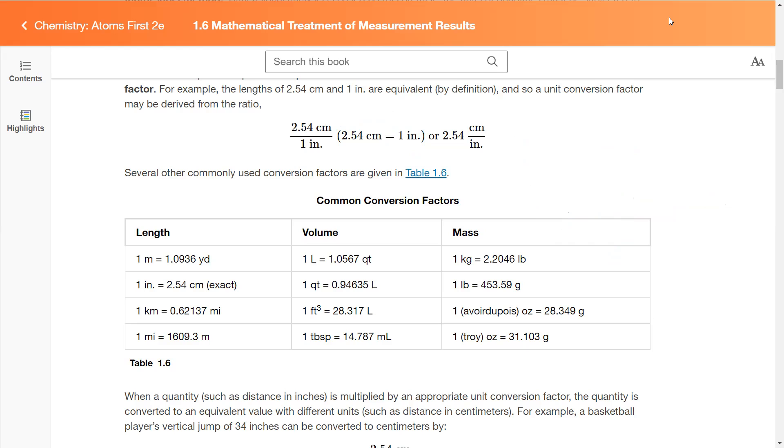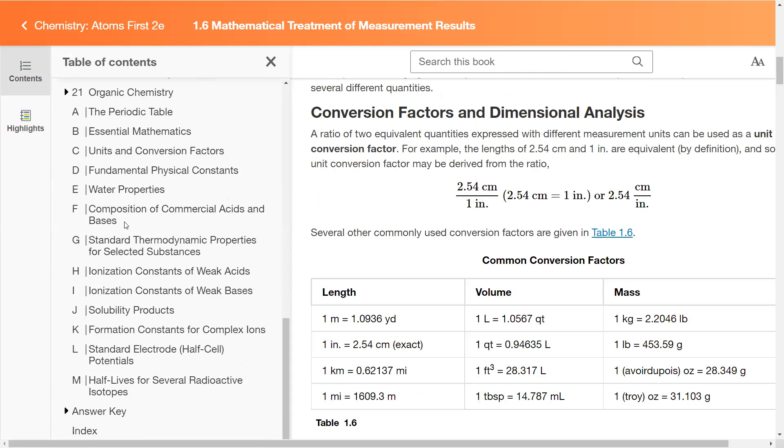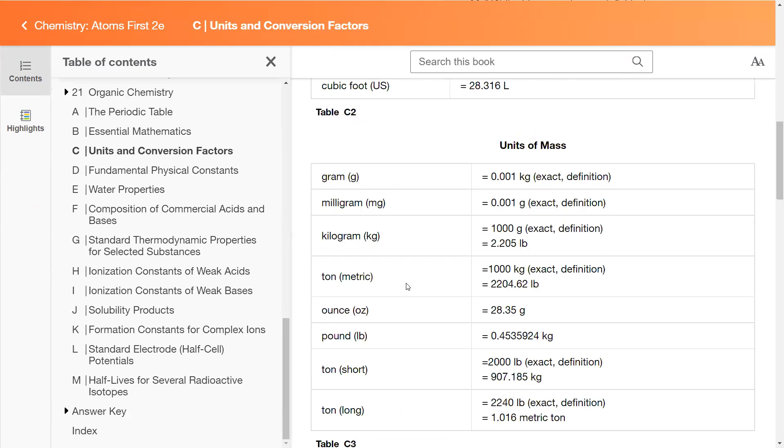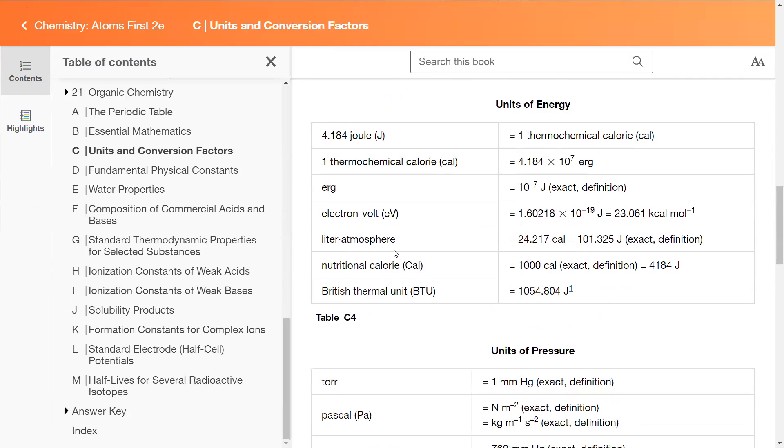In this table, we're provided with a list of common conversion factors. Things to keep in mind or write down will be that relationship between inches and centimeters. Sometimes we will use pounds to grams, but you can always come back to table 1.6. If you're needing some of these conversions, you can also find them in the appendix - units and conversion factors in appendix C. Let's look at that for a moment. We see units of length, volume, mass, energy, pressure.